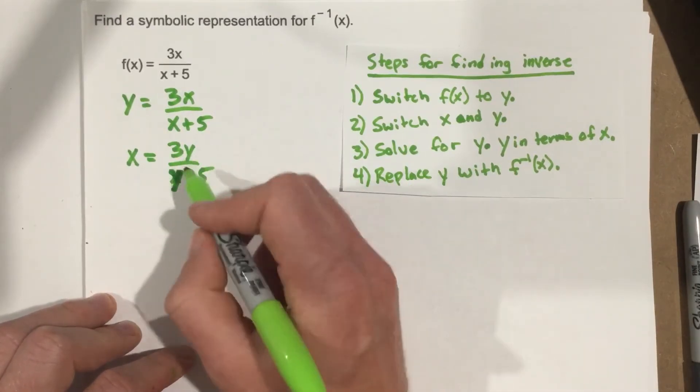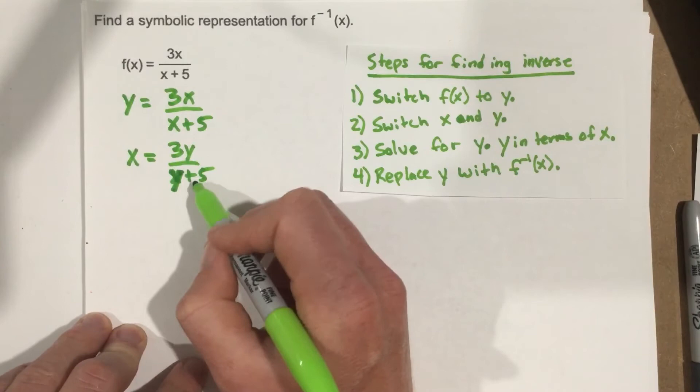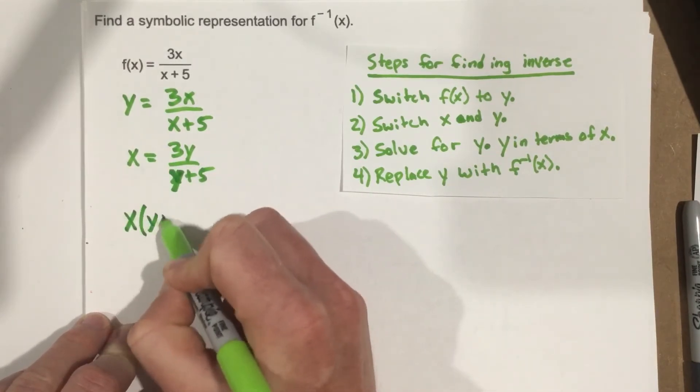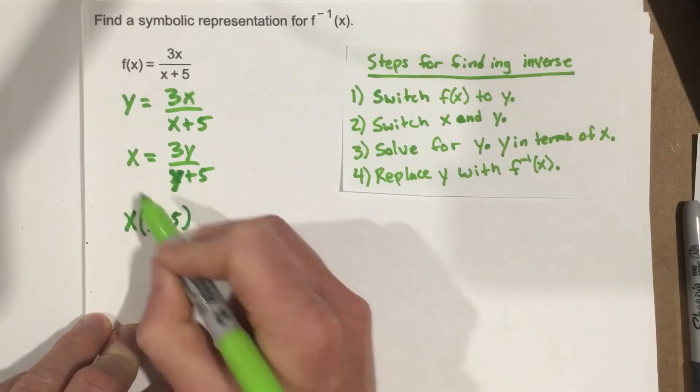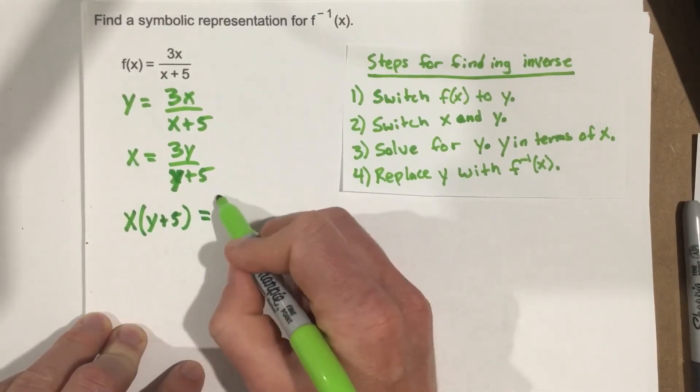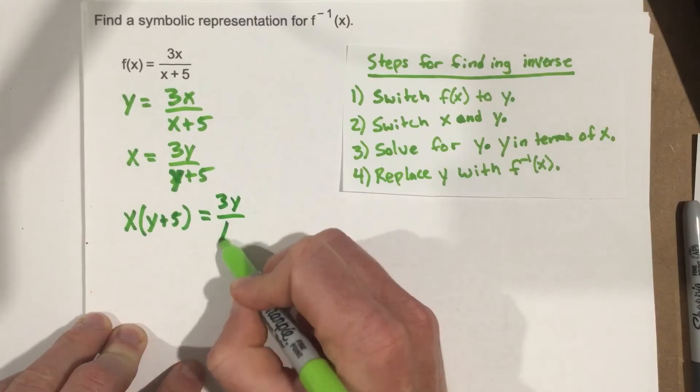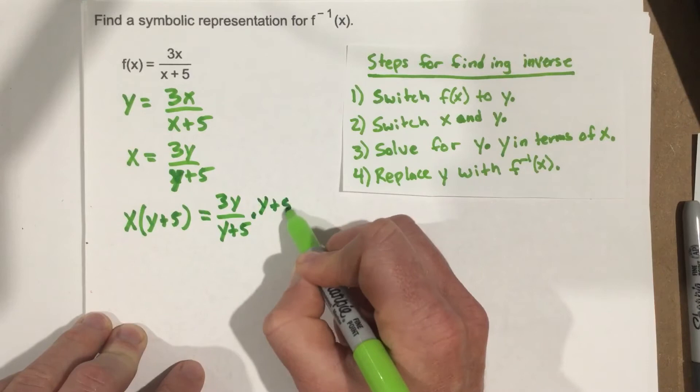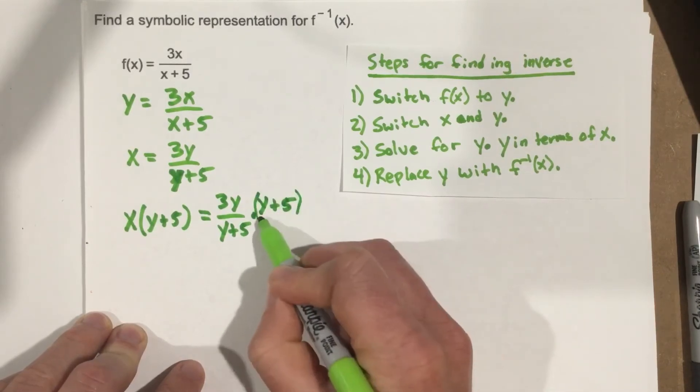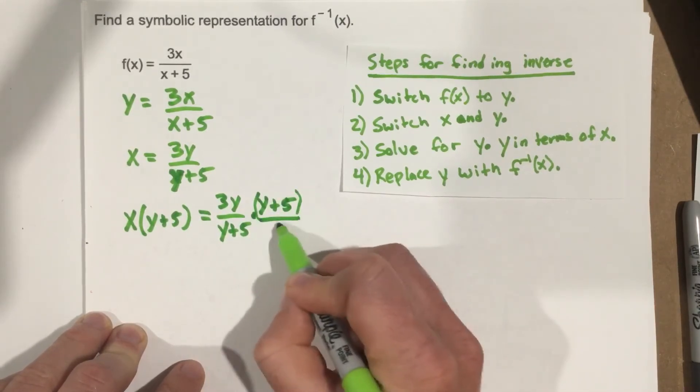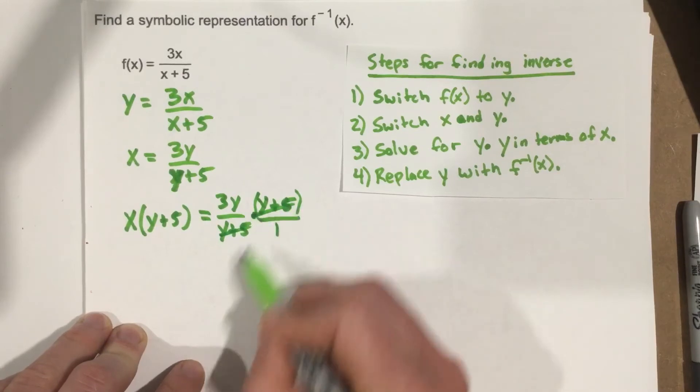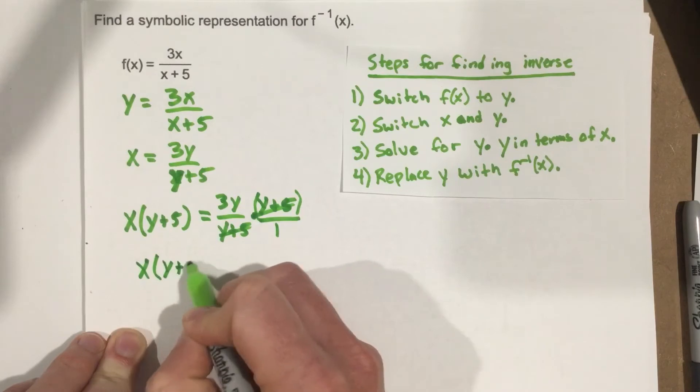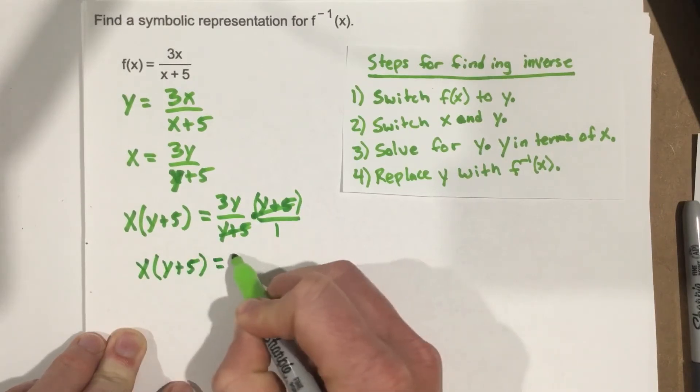Now we're going to multiply each side by y plus 5. So we get x times y plus 5. I'm going to multiply the left side by y plus 5, equals 3y over y plus 5 times y plus 5. Now remember, this is over 1. So because it's over 1, this cancels, right? And we're left with just 3y. So we have x(y plus 5) equals 3y.